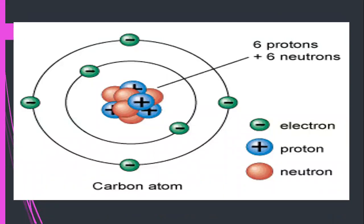We have discussed the structure of the atom in our previous lesson. We discussed that everything is made up of matter, and matter can be found in three states: liquid, solid, or gas. In all of these three states, the smallest particle of matter is the atom, and an atom can be divided into three subatomic particles. It contains electrons that carry a negative charge, and these electrons revolve in shells around the nucleus.